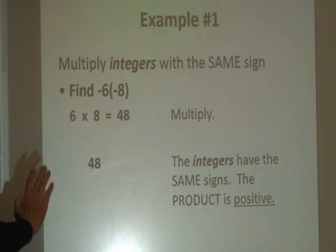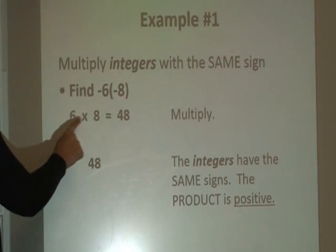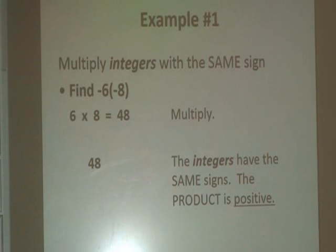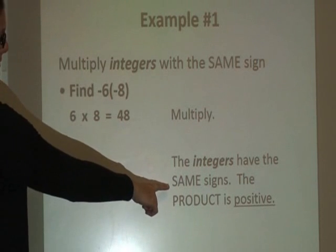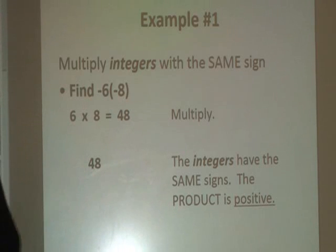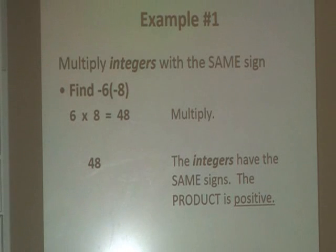We'll begin with simple multiplication facts. 6 times 8 we know is 48. And the second step is just to check your sign. The integers have the same signs, so the product is positive. So our answer is in fact positive 48.